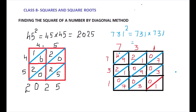Now add along each diagonal. First diagonal: 1. Second diagonal: 3+3 = 6. Third diagonal: 7+9 = 16, then 16+7 = 23 — write 3, carry 2. Next diagonal: 2+1 = 3, then 3+1 = 4, no carry — then 9+2 = 11, 11+2 = 13 — write 3, carry 1. Then 1+4 = 5. So the answer for 731² is 534,361.